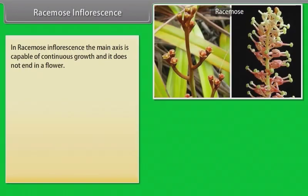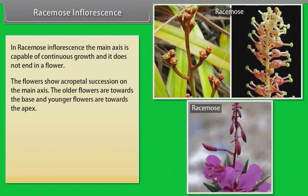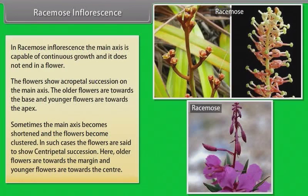In racemose inflorescence, the main axis is capable of continuous growth and it does not end in a flower. The flowers show acropetal succession on the main axis — older flowers are towards the base and younger flowers are towards the apex. Sometimes the main axis becomes shortened and the flowers become clustered; in such cases the flowers show centripetal succession, where older flowers are towards the margin and younger flowers are towards the center.